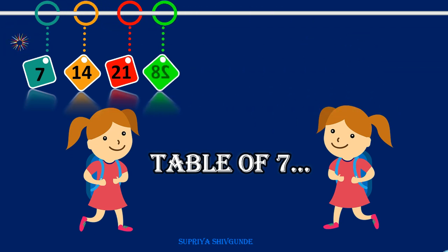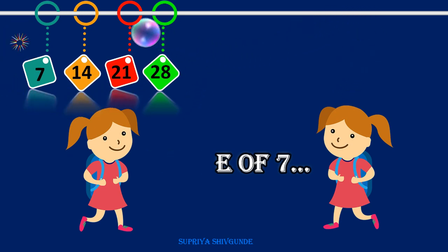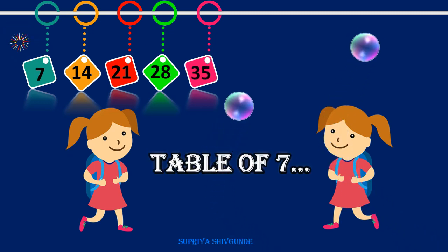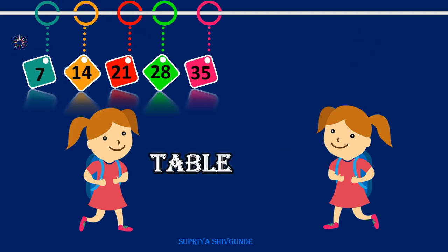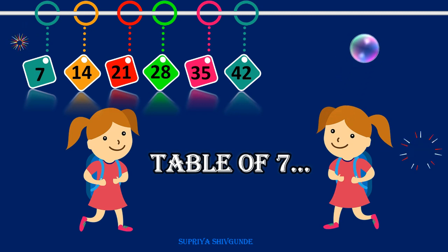Seven fours are twenty-eight, seven fours are twenty-eight. Seven fives are thirty-five, seven fives are thirty-five. Seven sixes are forty-two, seven sixes are forty-two.